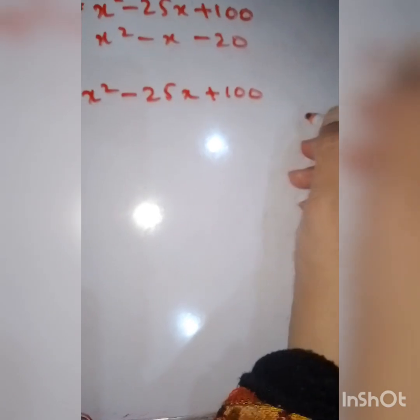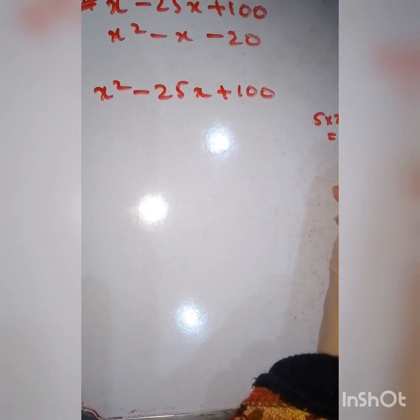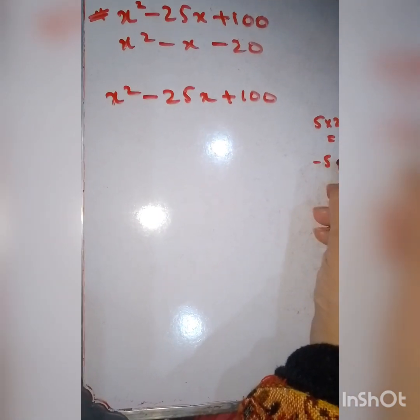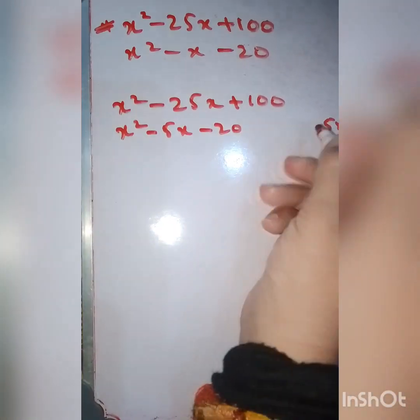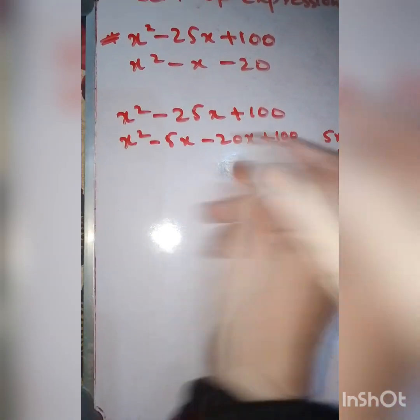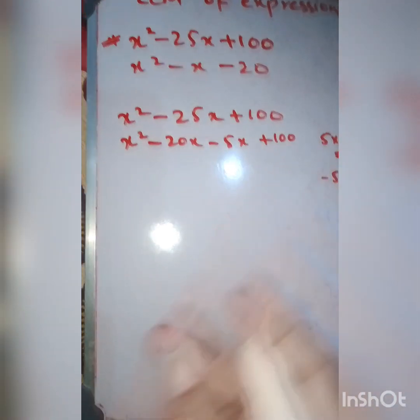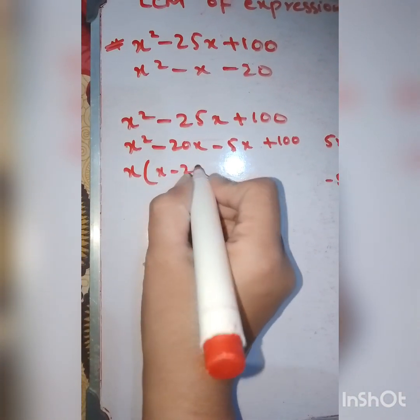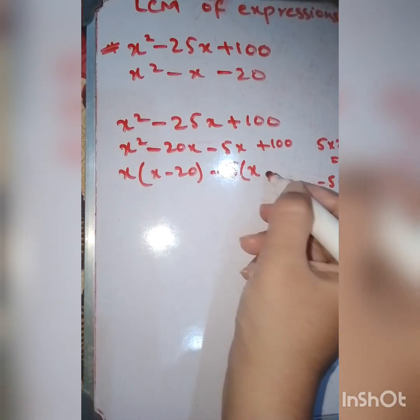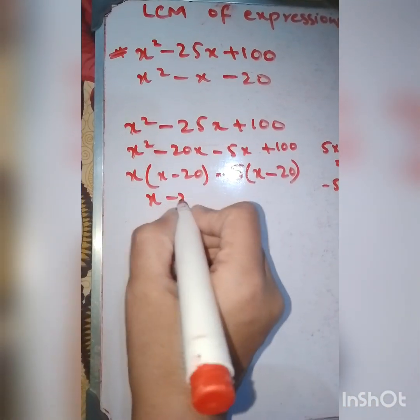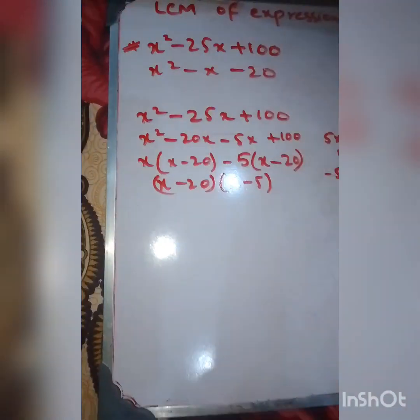We have to get the product as 100. I know that 5 times 20 is 100. If we add -5 and -20, we get -25 with the negative sign. So x² - 5x - 20x + 100. x(x - 20) - 5(x - 20). Taking common: (x - 5)(x - 20). Here I have obtained the answer from the first expression.